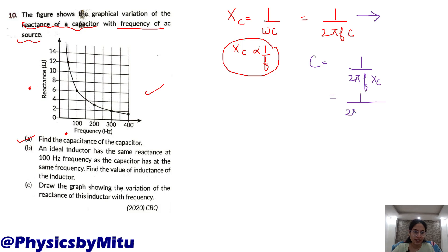From the graph, find all values. Frequency is, if you take any point, you can take any point. It is 100 frequency and the reactance is 6 ohm.